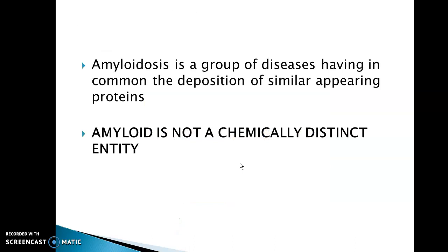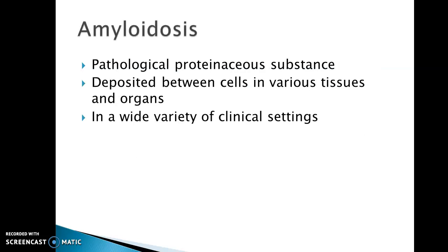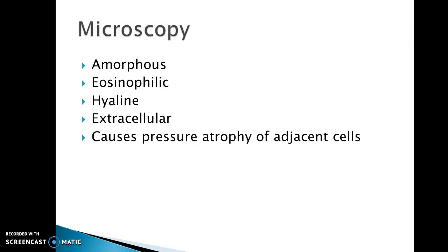Today we know Amyloidosis is a group of diseases having in common the deposition of similar appearing proteins. We must remember Amyloid is not a chemically distinct entity. Amyloid is a pathological proteinaceous substance deposited between cells in various organs and tissues in a wide variety of clinical settings.